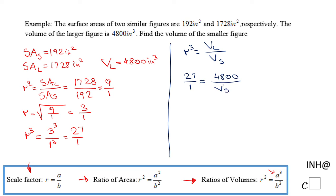For finding the volume of the smaller figure, we can cross multiply and we have 27 times the volume of the smaller figure equals 1 times 4800. Then we're going to divide by 27 and we have the volume of the smaller figure is 1 times 4800, which is 4800 over 27. This one can be simplified by 3: 4800 divided by 3 is 1600, and 27 divided by 3 is 9.